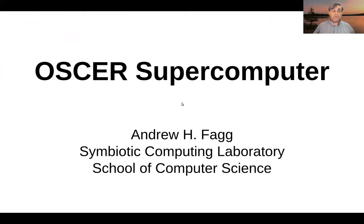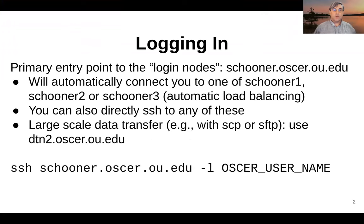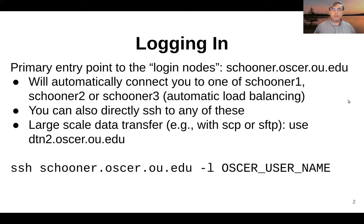Before we get into the coding side of things, let's talk about the OSCQR supercomputer that we have access to. The first thing we have to do is log into the supercomputer. The process is to SSH into schooner.oscar.ou.edu. This will not connect you to a single host, but you'll automatically be routed to one of schooner one, two, or three. This gives us some load balancing given how many users we have.